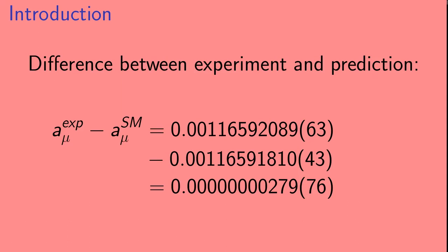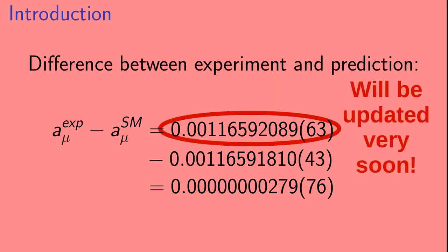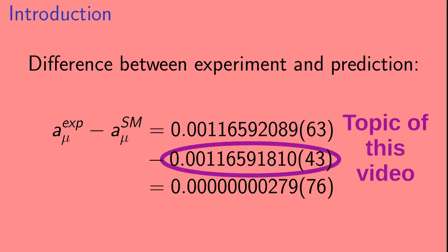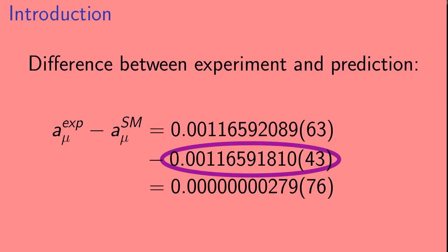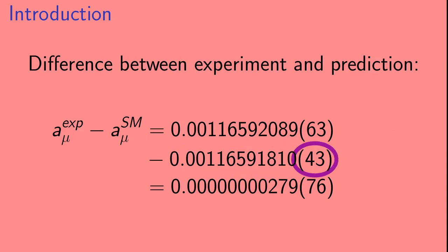If we look at the difference between the experimentally measured value and the value predicted by the standard model, we find that they differ by 3.7 sigma. The experimentally measured number will be updated very soon, but the standard model prediction will be the topic of this video. Here we're going to talk about the classes of contributions to muon G-2 in the standard model, and the uncertainties on the standard model prediction and where they come from.